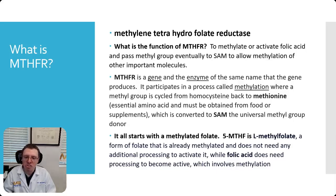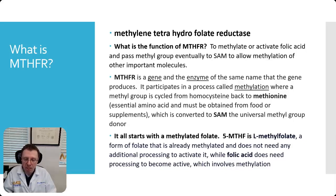What is the purpose of methylation? It is to be able to create a universal donor for the methyl group, and SAM is the final component that ends up methylating other important molecules in your body. Methylation is a process by which you pass a methyl group from folate to homocysteine back to methionine. Methionine is an essential amino acid, which means your body cannot make it — you have to get it from supplements or food. Methionine serves as the precursor to SAM.